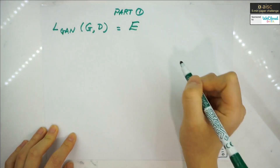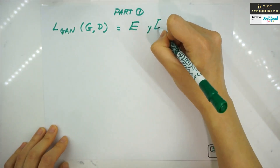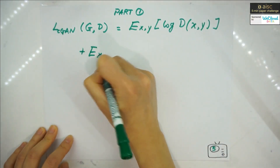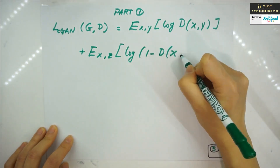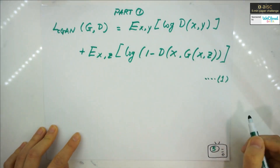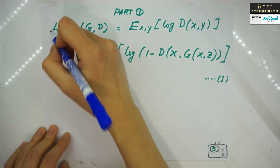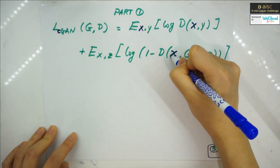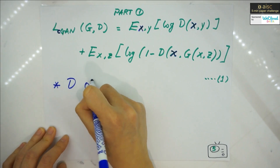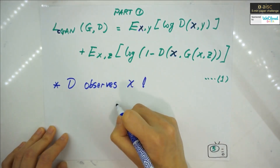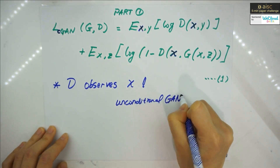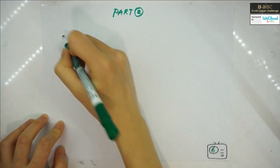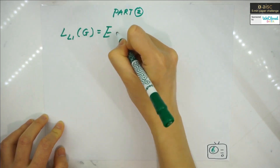In part one, the cGAN loss function: D maximizes the probability of assigning the correct label to both training examples and samples from G, while simultaneously training G to minimize log(1 - D). The key difference from an unconditional GAN is that in the cGAN, D actually observes x, whereas in the unconditional GAN it does not.